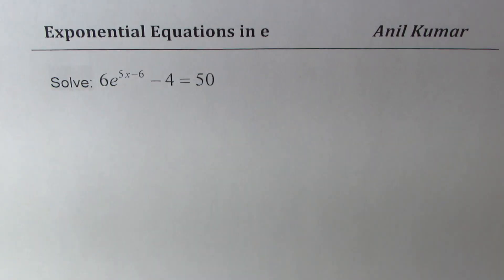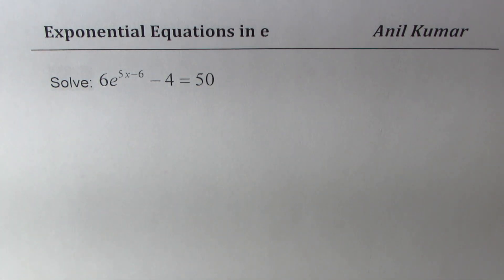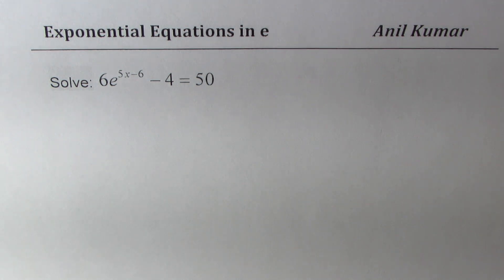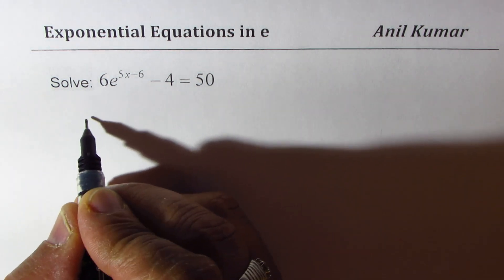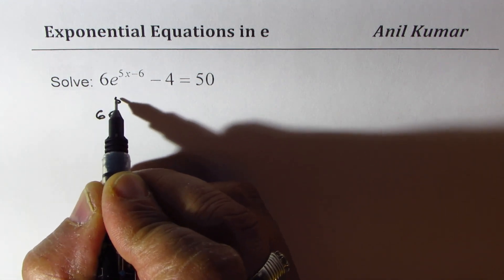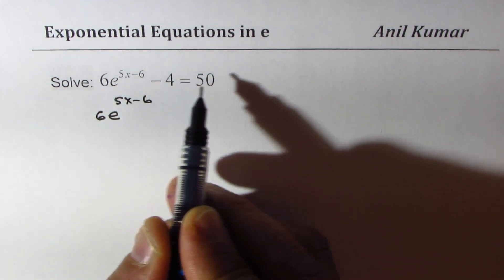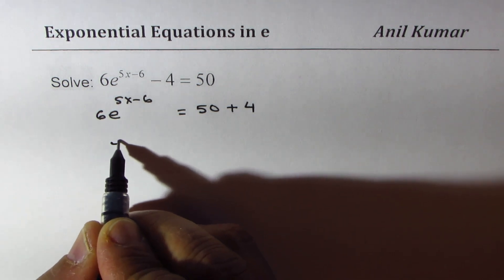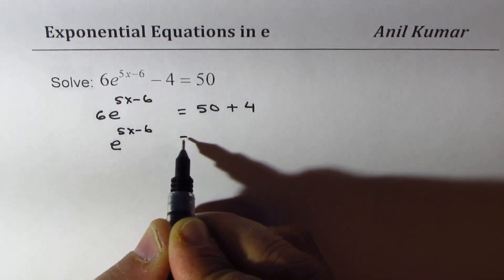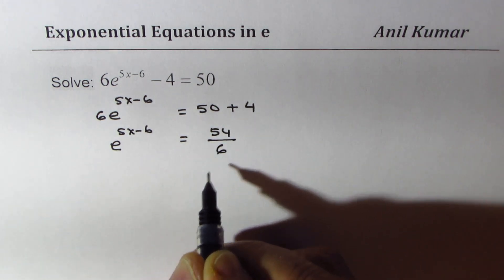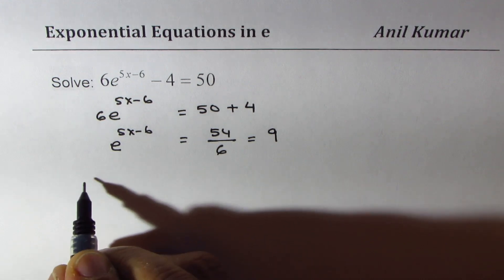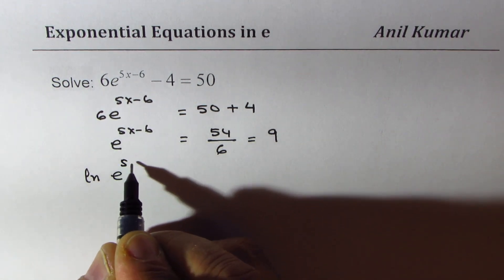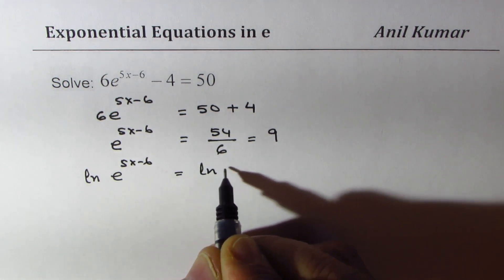We are almost at the end. Let's solve the last equation, which is also a similar kind — the steps are very standard. Pause the video, answer this question, and then look at my solution. We have 6 times e to the power of 5x minus 6 minus 4 equals 50. Taking 4 to the right side gives 54, then dividing by 6 gives e to the power of 5x minus 6 equals 9. Taking natural log on both sides: ln(e^(5x-6)) equals ln(9).